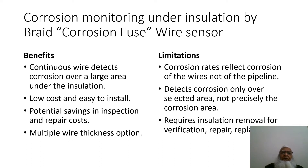Benefits of the braid or fuse wire sensor: a continuous wire detects corrosion over a larger area under the insulation; low cost and easy to install; potential savings in inspection and repair costs; multiple wire thickness options are available. Limitations: corrosion rates reflect the corrosion of the wires, not of the pipeline; detects corrosion only over selected areas; requires insulation removal for verification, repair, and replacement.